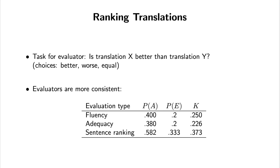In subsequent years at WMT, organizers asked whether a better evaluation metric could yield more consistent evaluators. One approach is to rank translations: rather than use a five-point scale, ask whether one translation is better than, worse than, or the same as another. People are more consistent at this pairwise judgment, and the kappa coefficient here is 0.37 — an improvement. Since these slides were made, there's been additional experimentation using a global ranking system where each sentence is rated on a scale of 0 to 100.